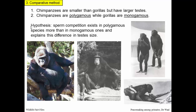This leads to the following hypothesis: sperm competition exists in polygamous species more than in monogamous ones, and this explains the difference in testes size. When a gorilla mates with a female, he only has to provide enough sperm to impregnate her. But when a chimpanzee mates with a female, his sperm is competing with the sperm of all the other males. So the more he puts in, the better his chances that it's one of his that does the fertilization. Maybe that explains larger testes — to make more sperm cells to win the competition.